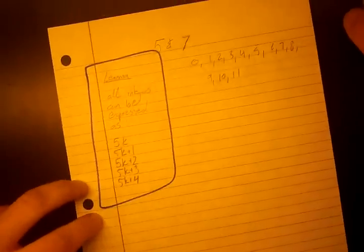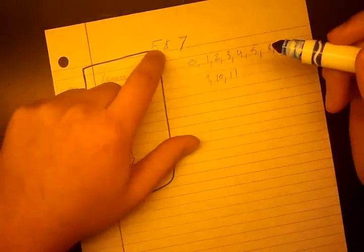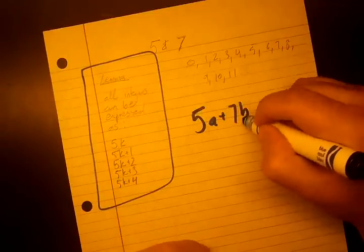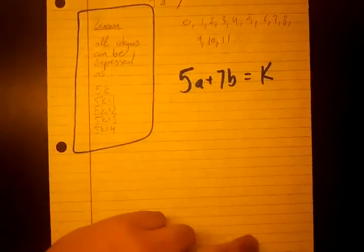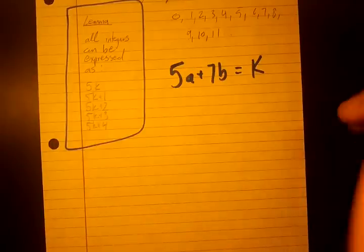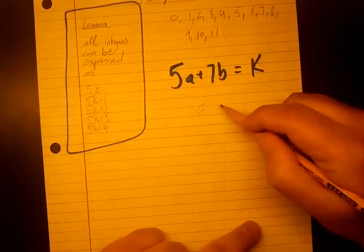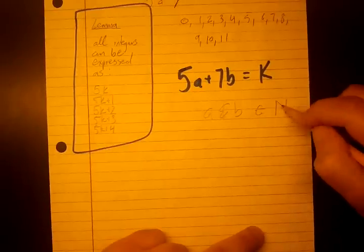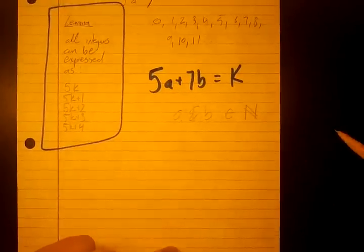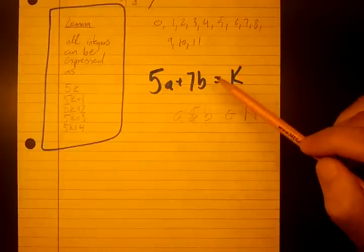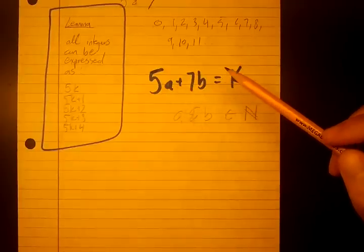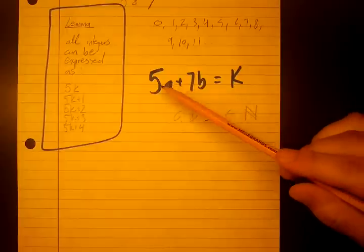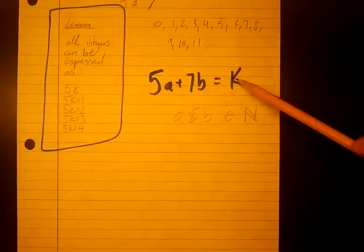So now we're going to dive right into the proof. This problem can be stated as 5 times some number A plus 7 times some number B equals K, and the condition is that A and B are natural numbers. They can be 0 as well, but then we just get K equals 0, and there's no real point of forming 0 things. So we see that if we plug in A and B, we're going to get some number.